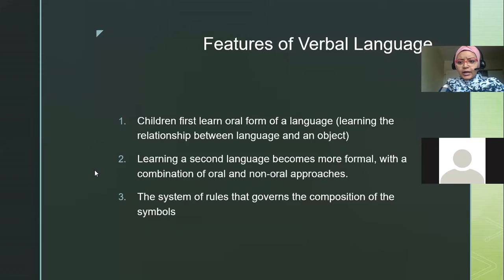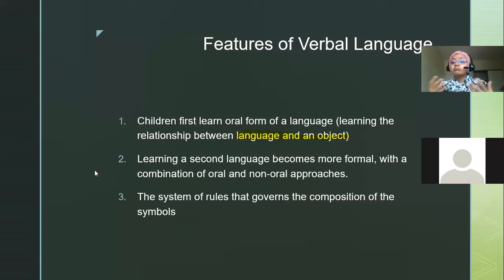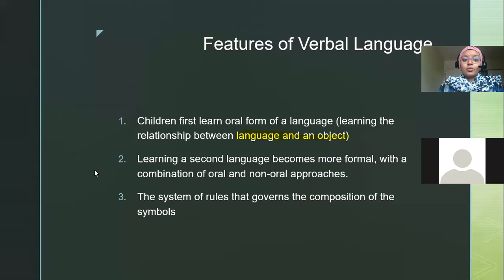Most of your mother tongues are either Punjabi or Hindi. How do you learn the very first words? It probably comes from learning the relationship between the language and the object. Learning your mother tongue is very informal — you learn it with your parents at home, maybe learning shapes, colors. Then you grow up, go to school, kindergarten, and your second language comes in, which is most of the time English, learned more formally with a combination of both oral and non-oral approaches.